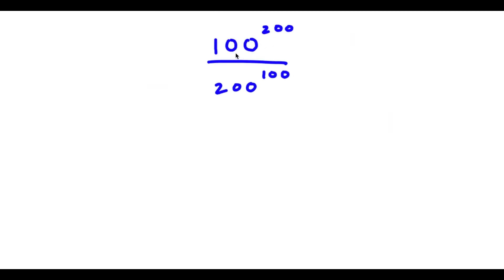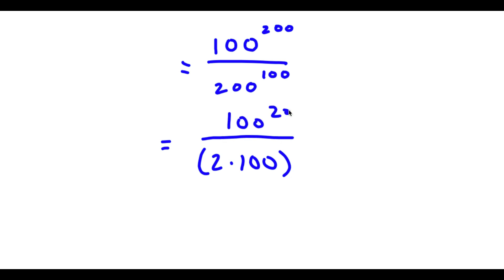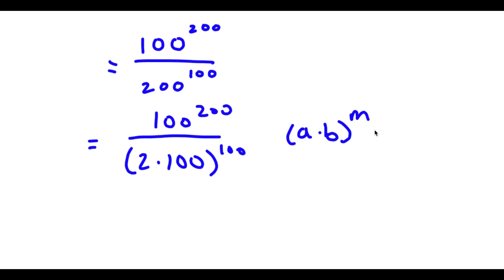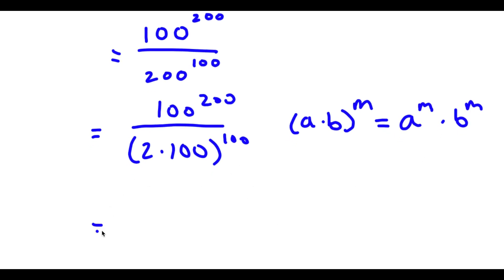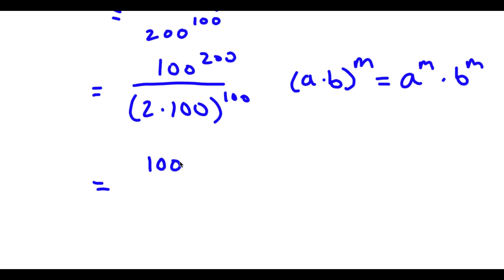Alright, so I have 100 to the power of 200 over 200 to the power of 100. Now 200 is the same thing as 2 times 100. So I have 100 to the power of 200 over 2 times 100 to the power of 100. Now if I have something in the form a times b to the power of m, this is equal to a to the power of m times b to the power of m. So I get 100 to the power of 200 over 2 to the power of 100 times 100 to the power of 100.